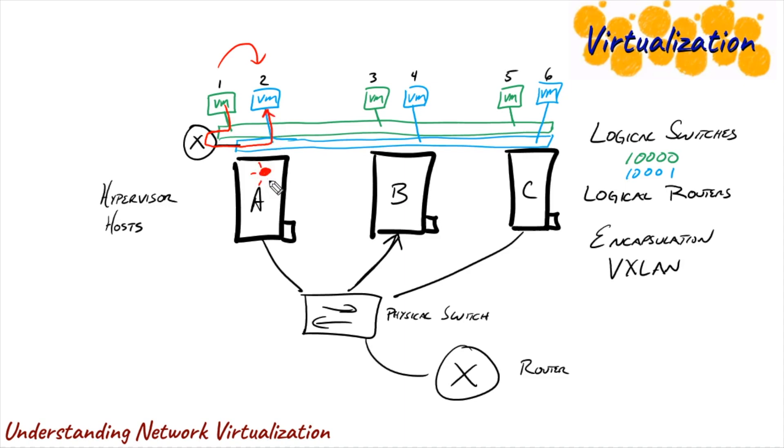All of that is happening right there, in this case on hypervisor host A. It didn't have to touch the physical switch. It didn't have to touch the physical router. It's totally isolated. Notice how much more efficient that is than the long hairpin turn that we were talking about earlier. But because the exact same logical router exists in the mind of hypervisor host A, B, and C.